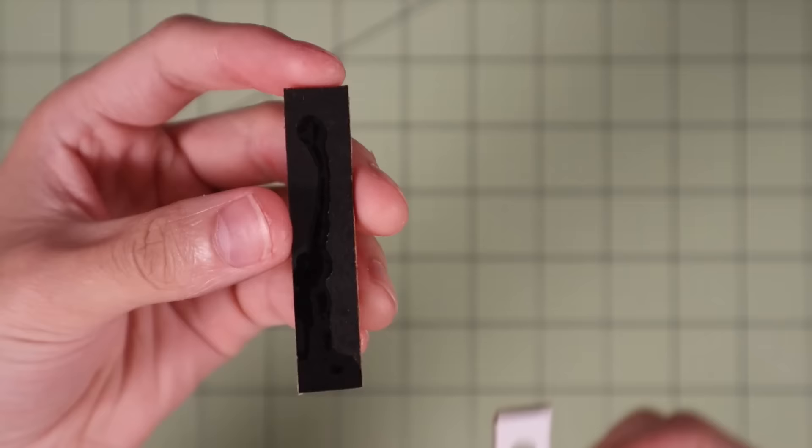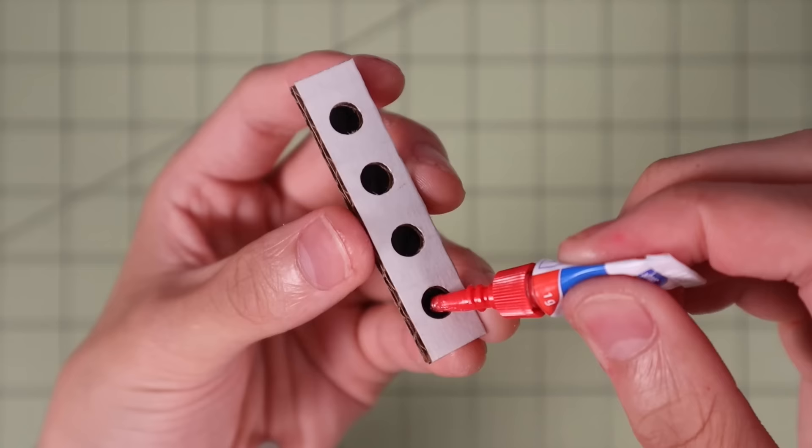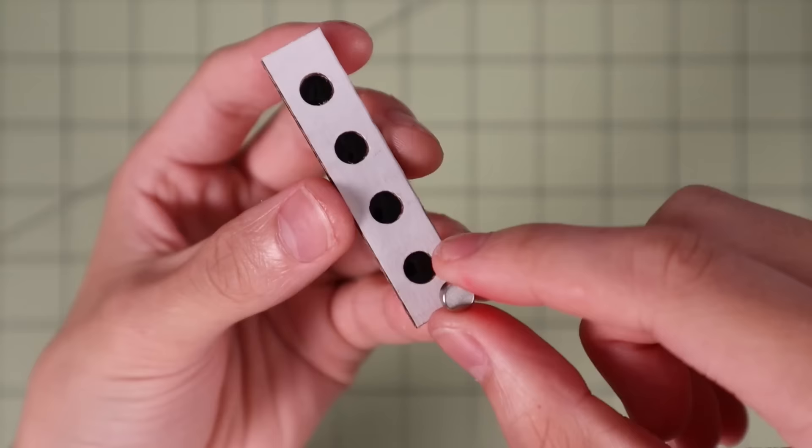At this point I decided to make some magnet closures for the web shooter so that I could actually wear it on my wrist, and I did that using some 6x3 magnets.